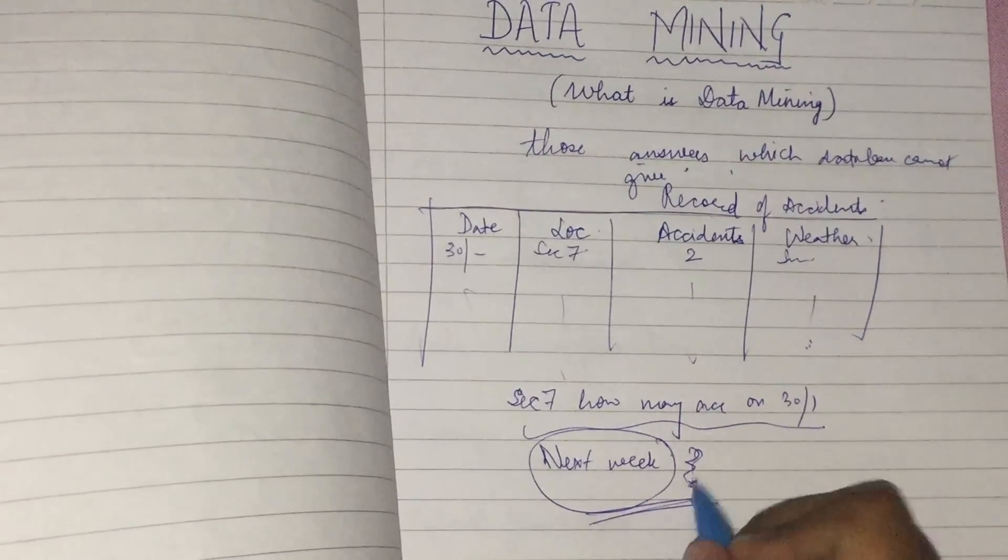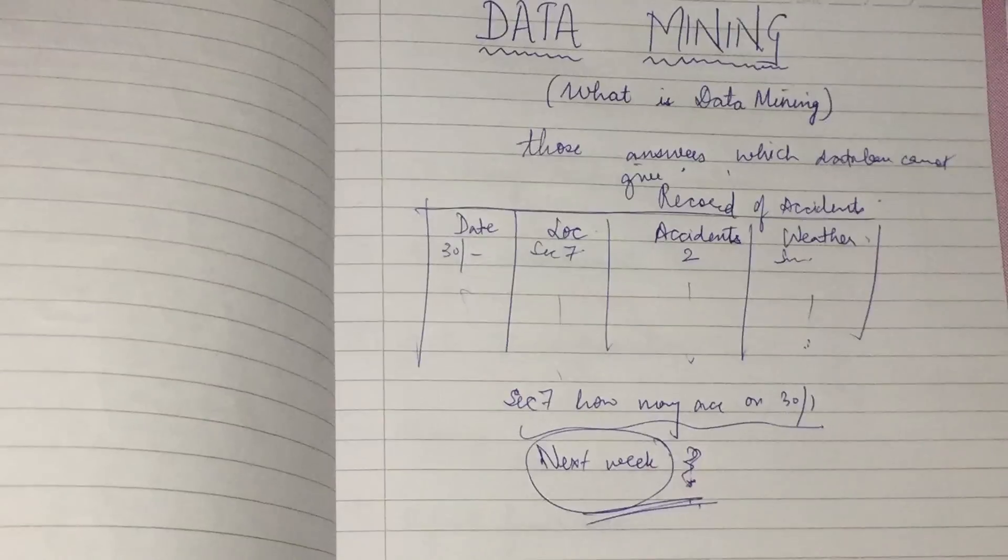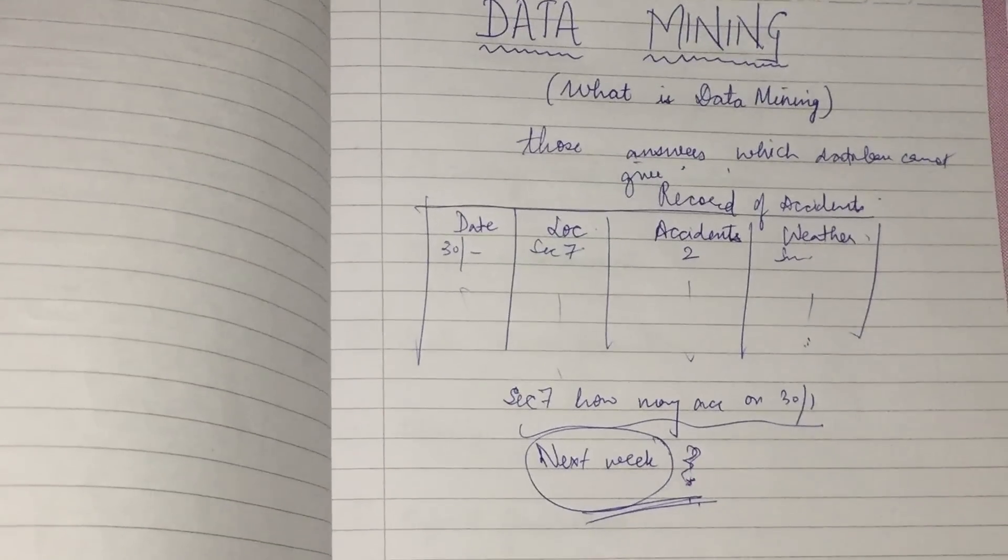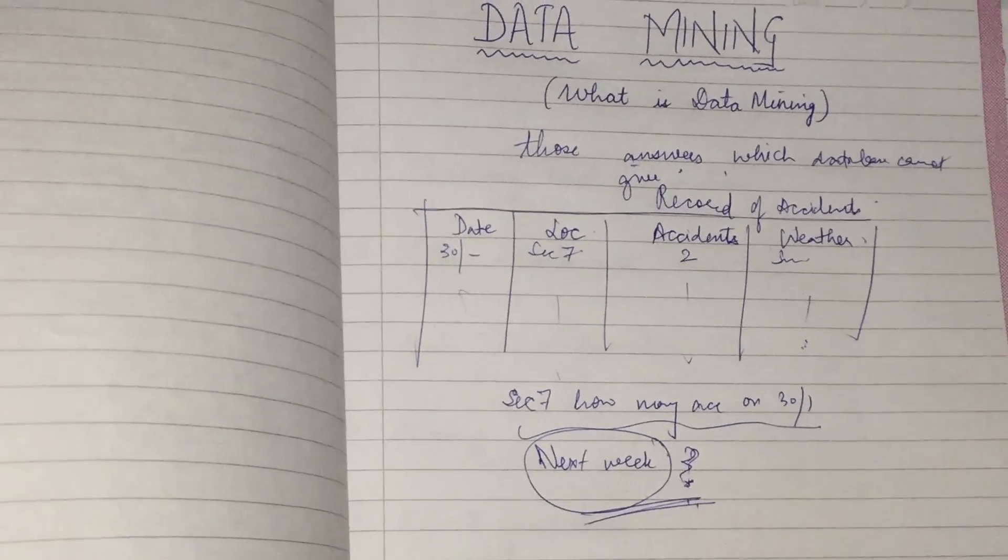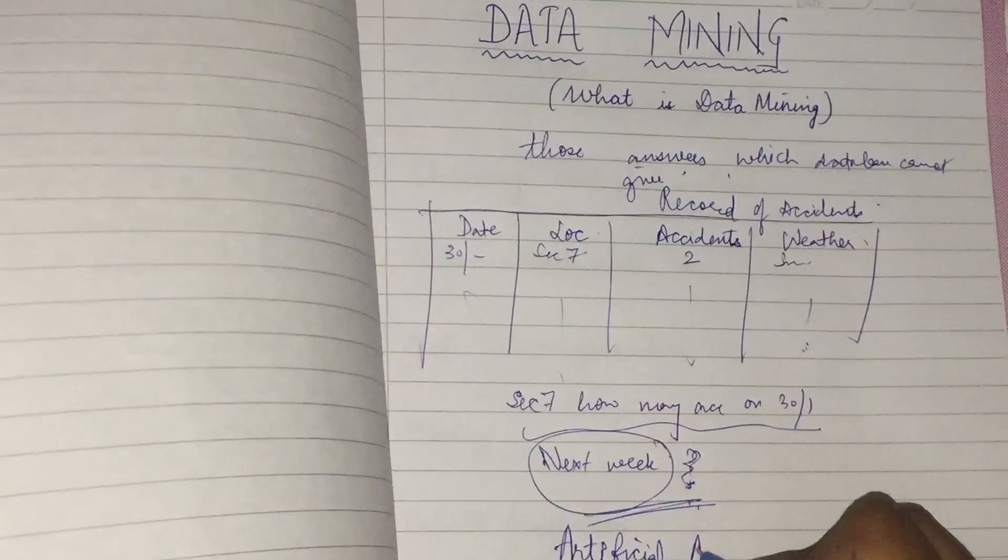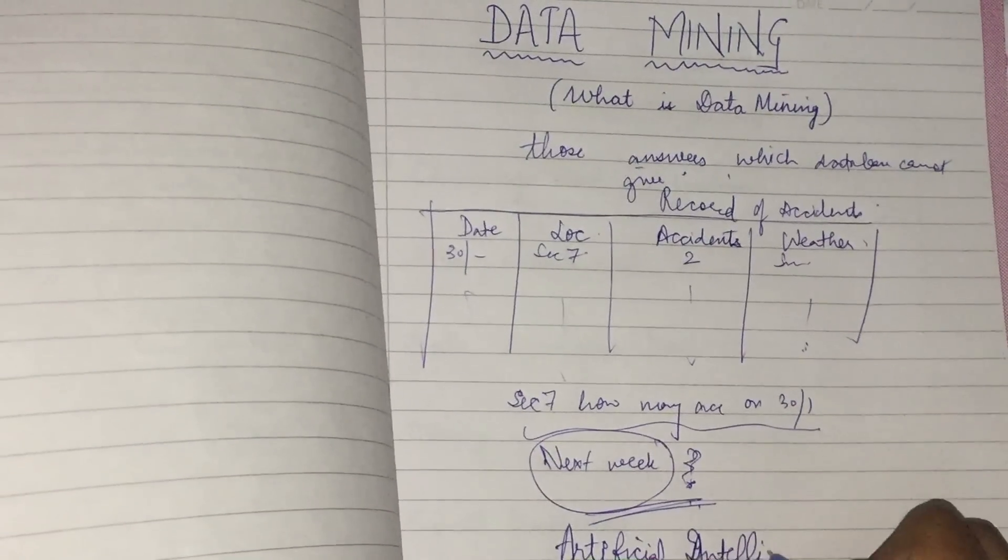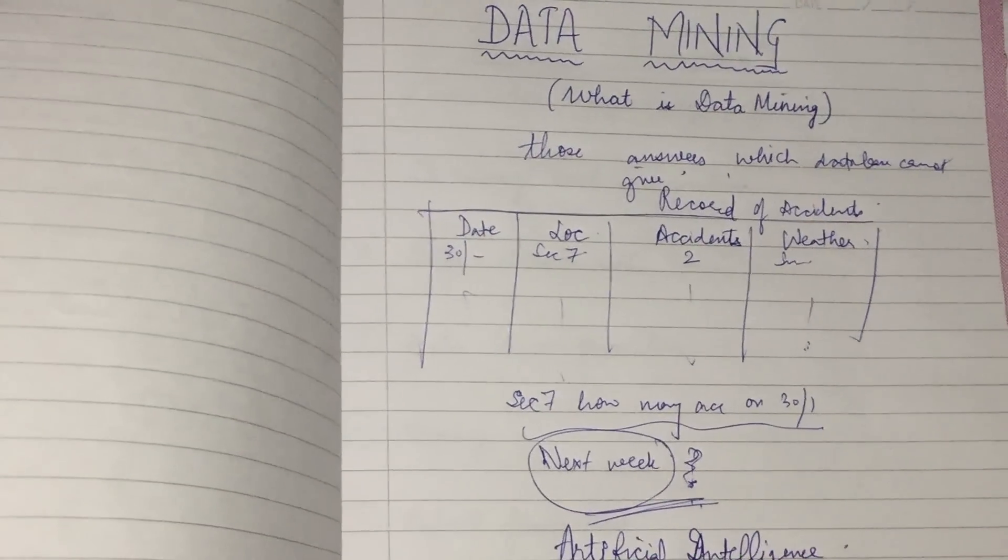So this is the thing that data mining can tell me. I will predict my answers, I'll give the best probability for my answers on the basis of my previous information. So data mining is a field of artificial intelligence that, on the basis of all data, I can give answers to the newer data.